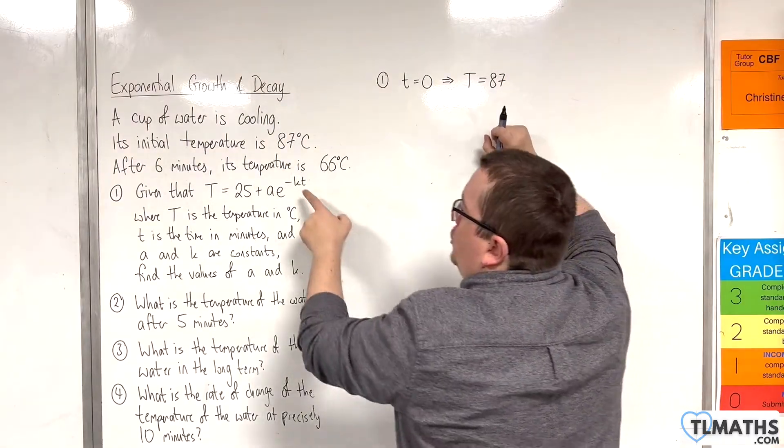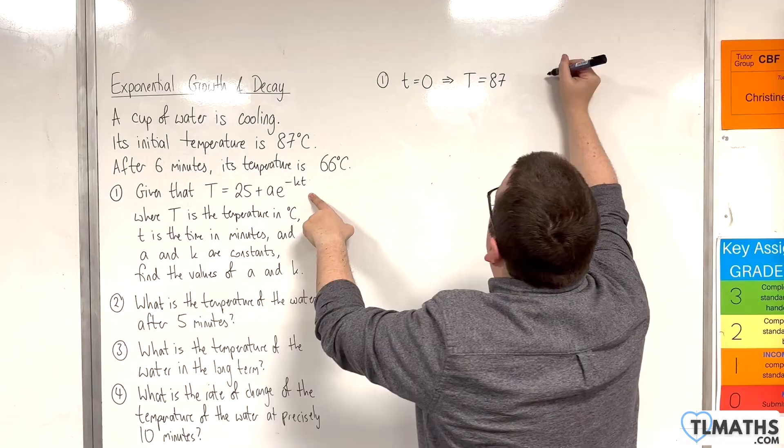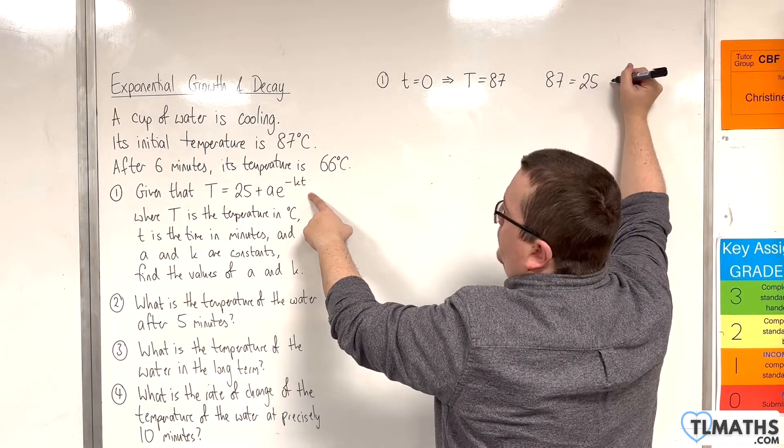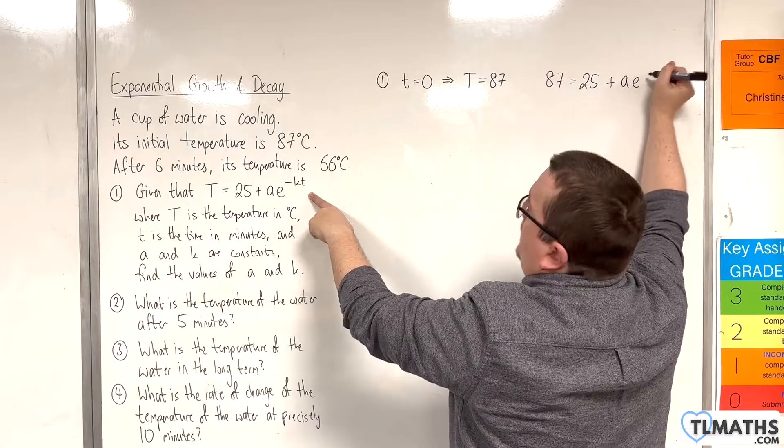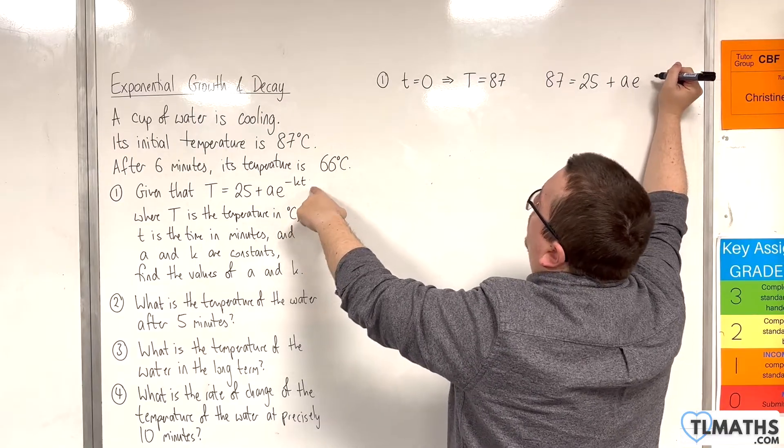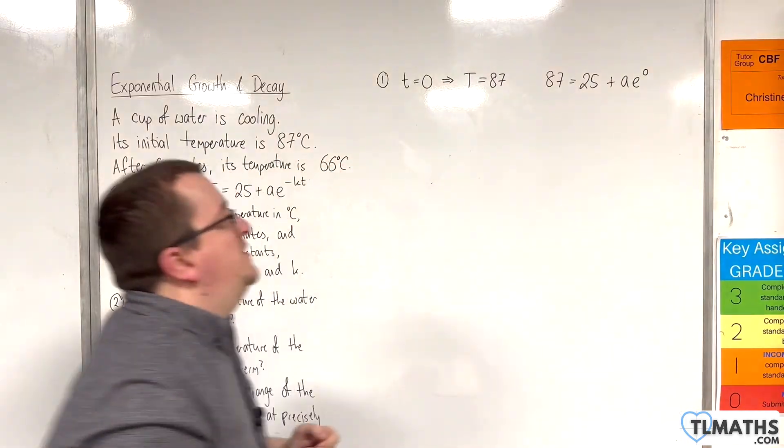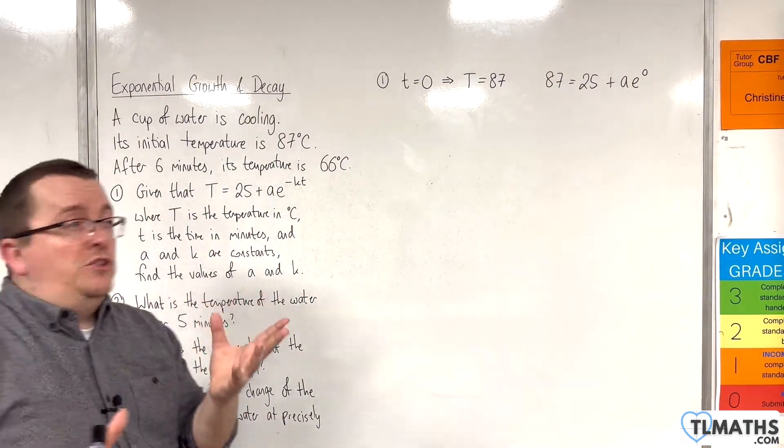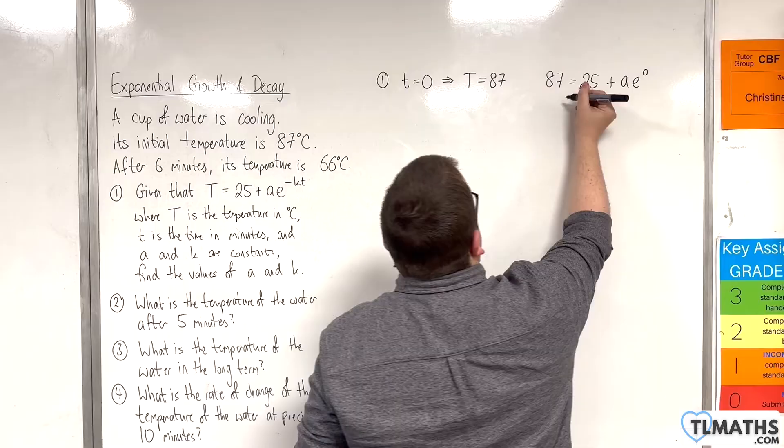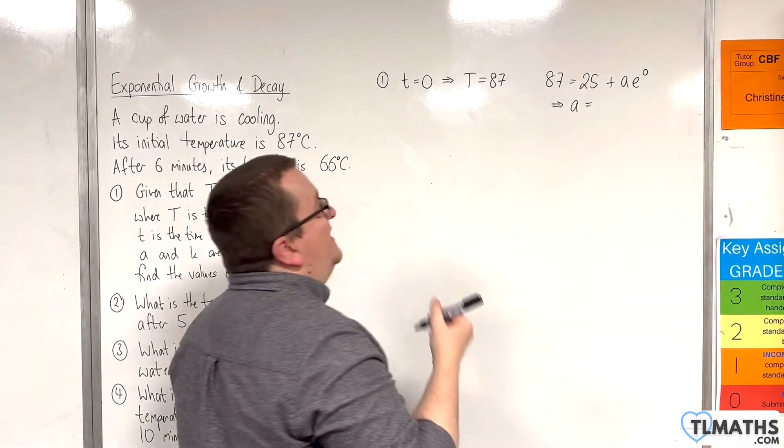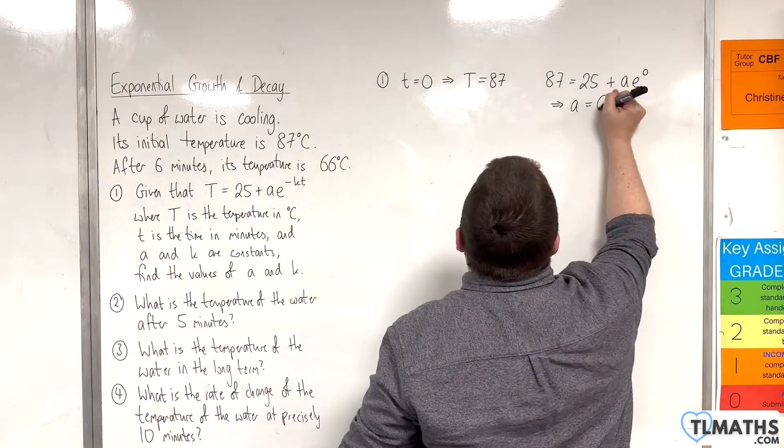So we can put that information into our formula and we will get 87 is equal to 25 plus AE to the minus K times T, and T is 0, so AE to the 0. Now E to the 0 is just going to be 1, so that implies that A is going to be 87, take away 25, so 62.